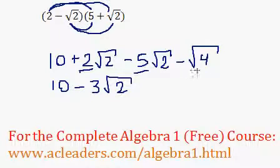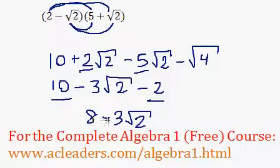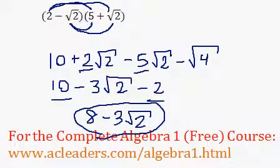And over here we have minus root 4. Root 4 is just 2. So we just have really a minus 2 over here. So 10 minus 2 is 8. And our final answer is 8 minus 3 root 2. And at this point, we're done.